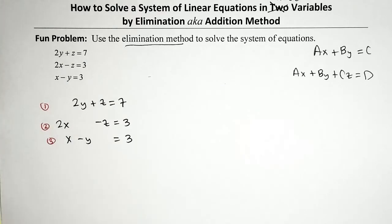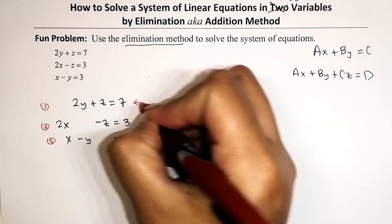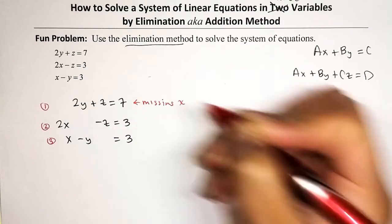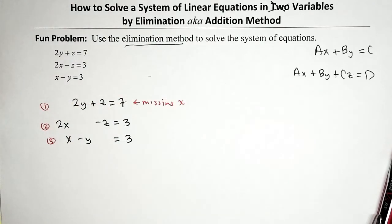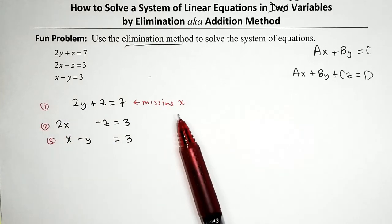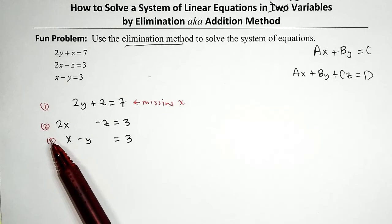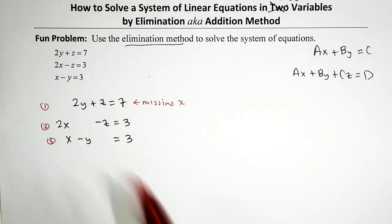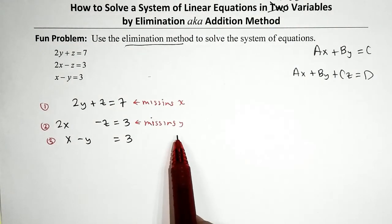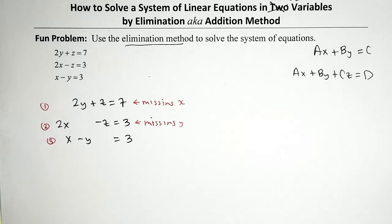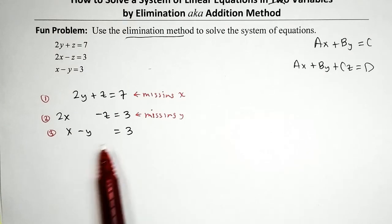If all three equations had all three variables, I'd just say which variable catches your eye. But in this case we have some missing variables. The first equation is missing X — so I'll write a little love note: 'missing X.' The second equation is also missing a variable, namely Y. And the third equation is missing the Z term.